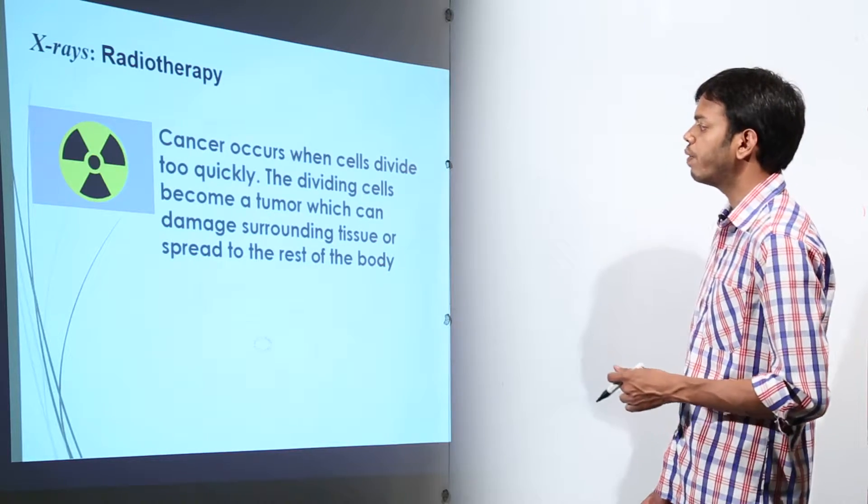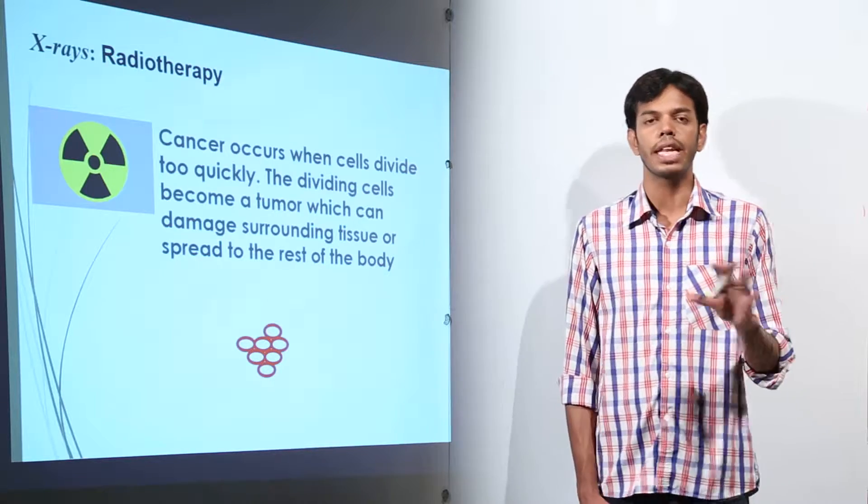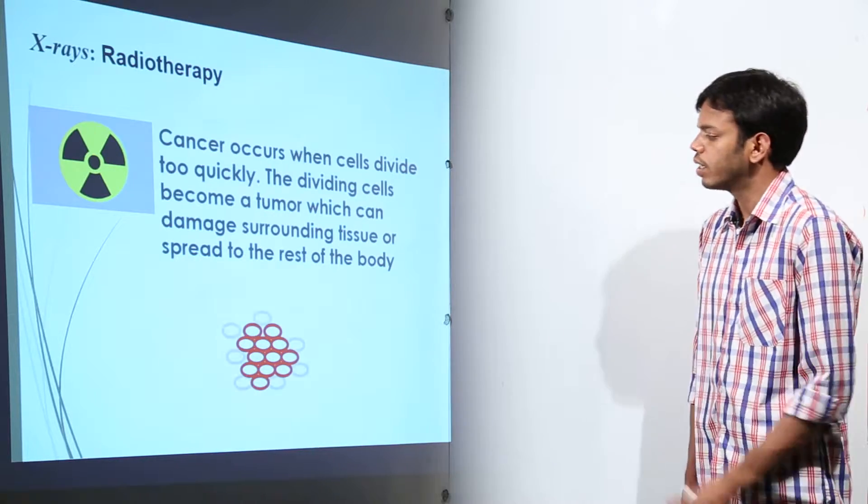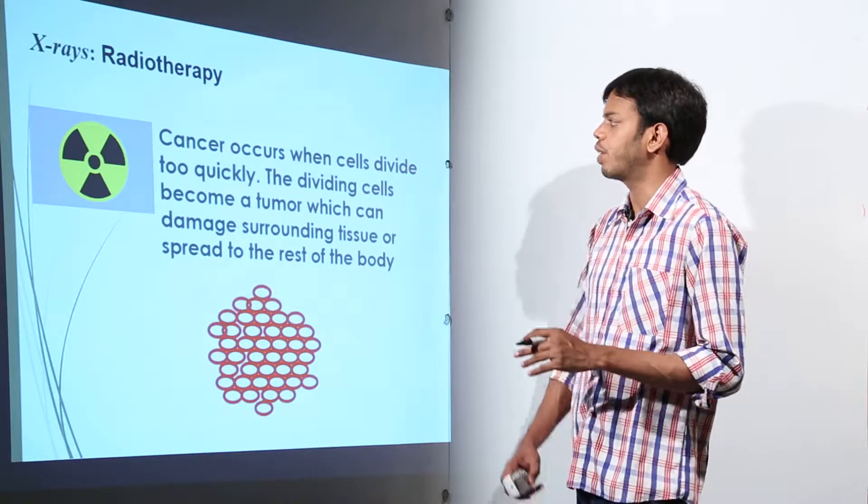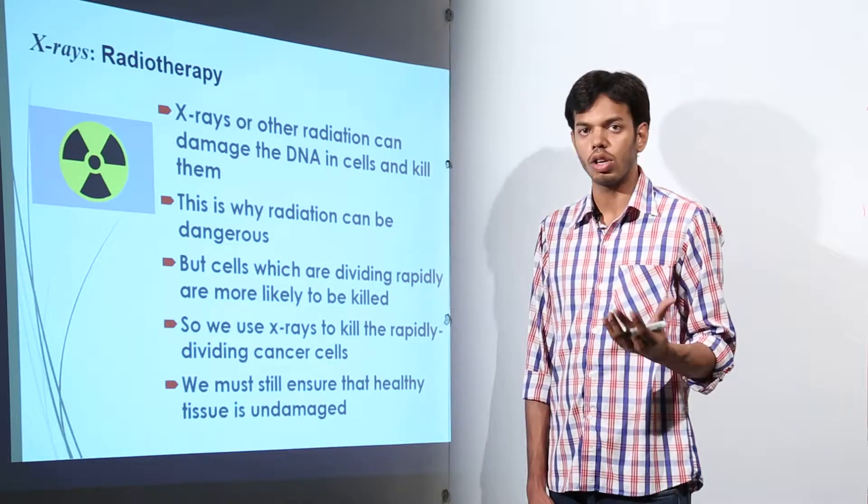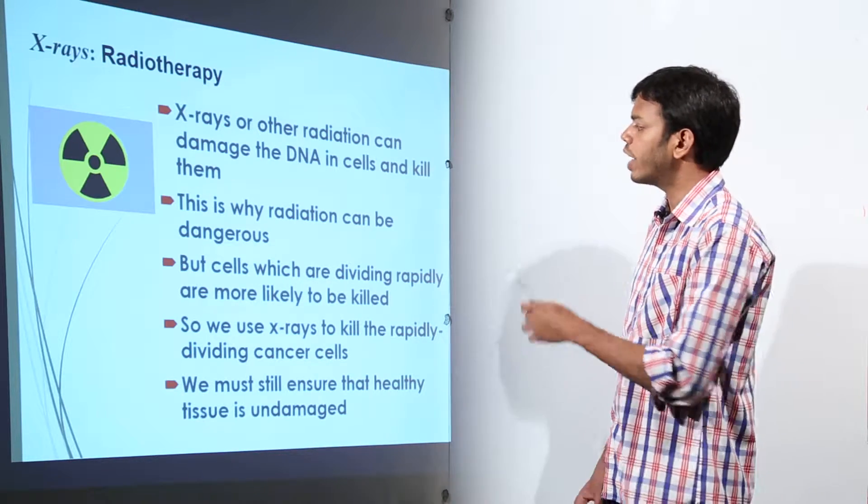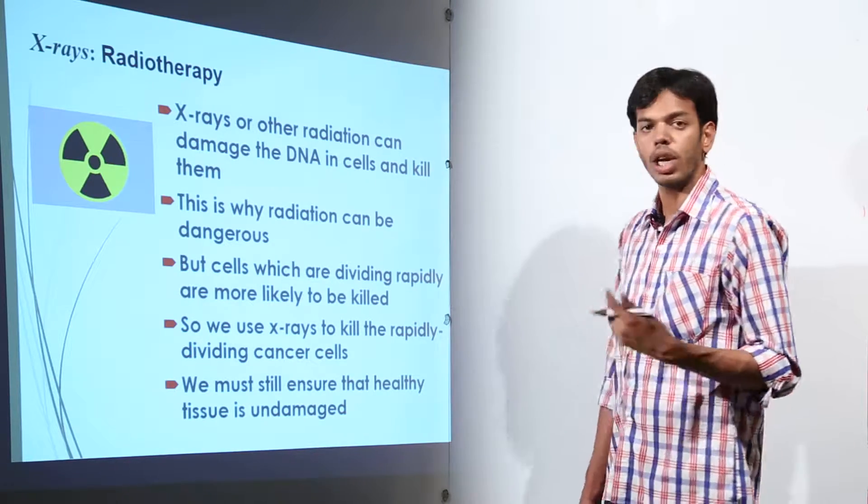The dividing cells become a tumor which can damage surrounding tissue or spread to the rest of the body. That, this is a very simple explanation of how cancer is done. So more and more number of cells increasing, this is what cancer is about. So when x-rays or other radiation can damage the DNA in cells, they can kill them. That is why radiation can be dangerous but cells which are dividing rapidly are more likely to be killed.